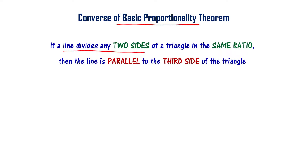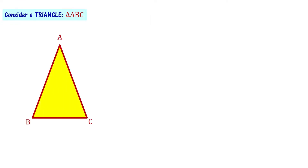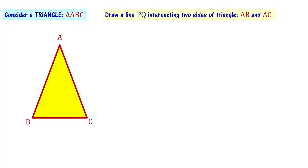Let us draw a line PQ intersecting two sides of a triangle, divided in the same ratio. The third side of the triangle is parallel to line PQ. Let us consider triangle ABC as shown here, and draw a line PQ intersecting two sides AB and AC of the triangle.